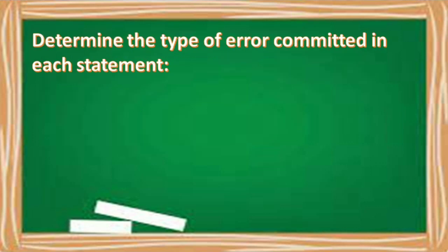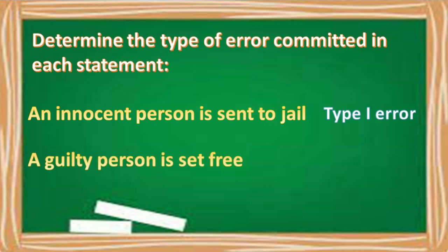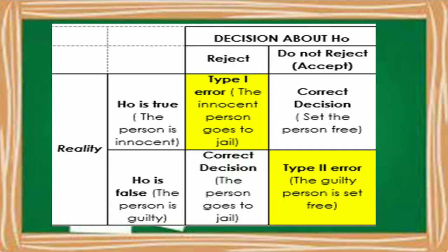Let us determine the type of error in each statement. First: an innocent person is sent to jail — this is a Type 1 error. Second: a guilty person is set free — this is a Type 2 error. In decision making: if the person is innocent, the correct decision is to set them free, so sending them to jail is a Type 1 error. If the person is guilty, the correct decision is to send them to jail, so setting them free is a Type 2 error.